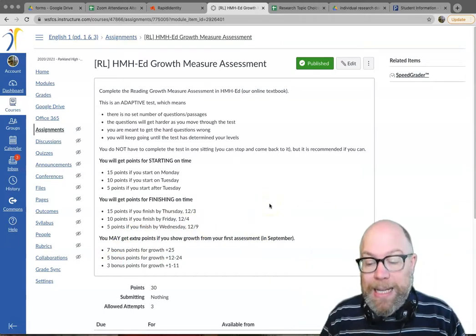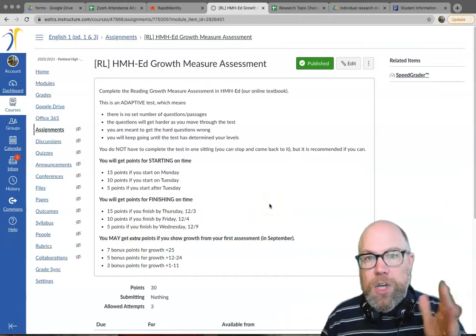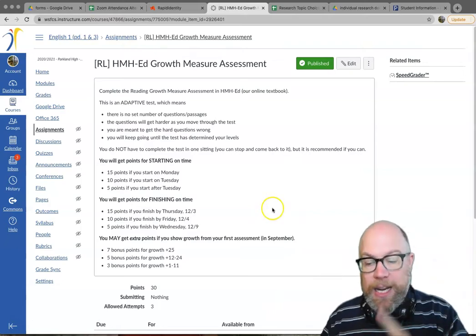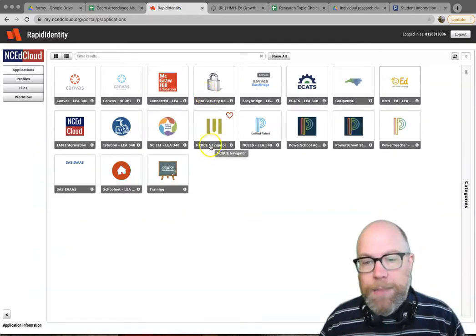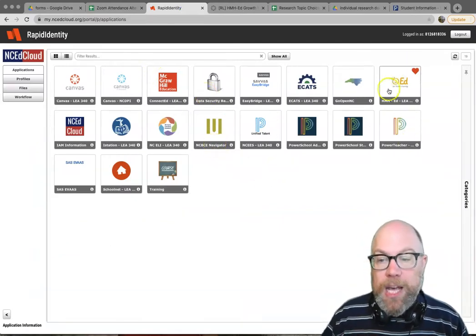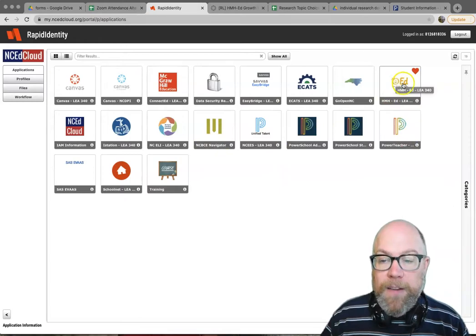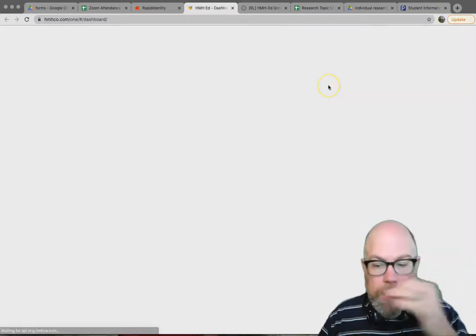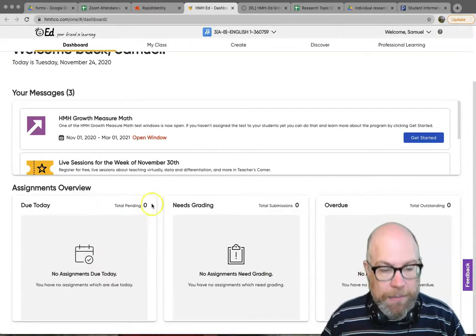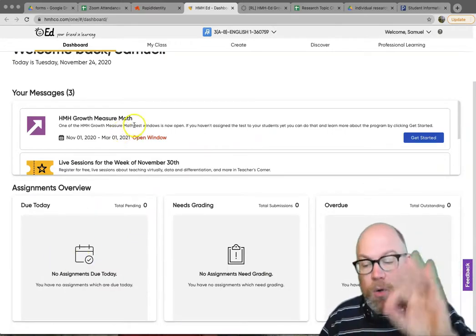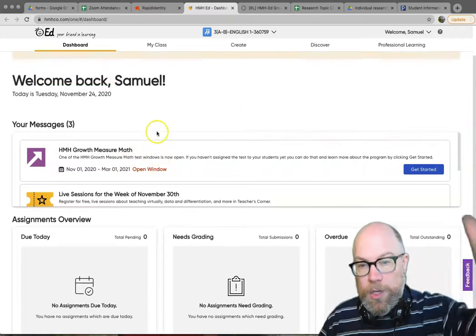So you don't have to submit anything in here. The only thing you have to do is go to HMH ed and take this assessment. And here's how you do that. You come into your NCEd cloud, AKA home-based apps, and you look for the HMH ed, the yellow smiley face with the ed. When you open this up on your dashboard, which looks a little different than mine. So because I have teacher view, you have student view, but on your dashboard, in your assignments, you should see the growth measure reading assessment.